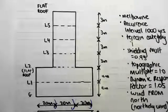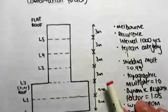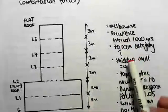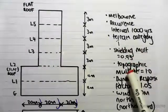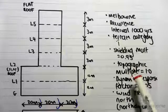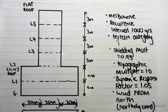The building's located in Melbourne. There's a recurrence interval of a thousand years, the terrain category is one, the shielding multiplier is 0.95, the topographic multiplier is one, the dynamic response factor is 1.05, and the wind is coming from the north.